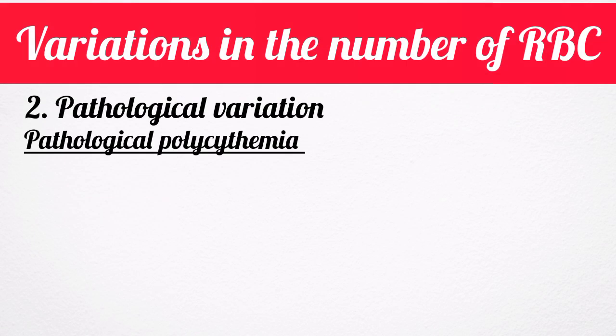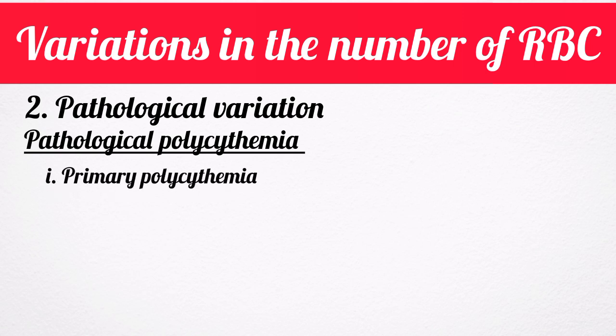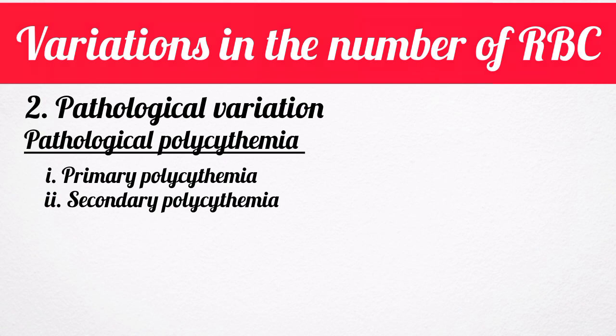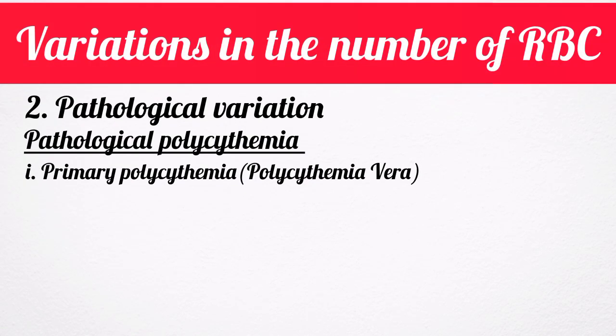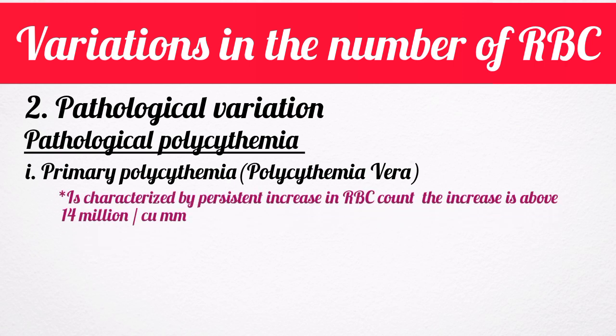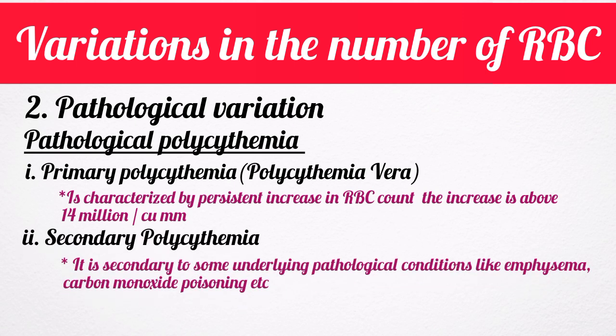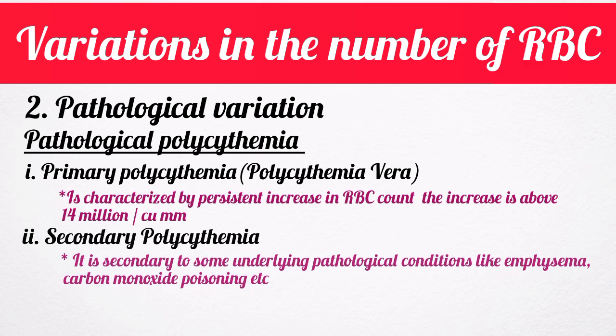Now let's talk about the pathological variation of red blood cells. In this variation, we have a condition known as pathological polycythemia — an abnormal increase in the red blood cell count above 7 million per cubic millimeter of blood. Polycythemia is of two types: primary polycythemia and secondary polycythemia. Primary polycythemia, otherwise called polycythemia vera, is a disease condition characterized by a persistent increase in red blood cell counts above 40 million per cubic millimeter of blood. Secondary polycythemia is secondary to some underlying pathological conditions, like respiratory disorders such as emphysema or chronic carbon monoxide poisoning.